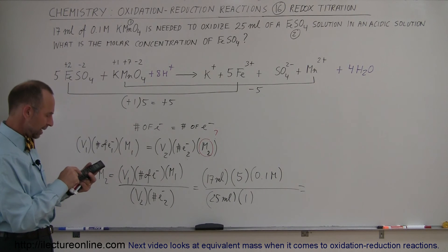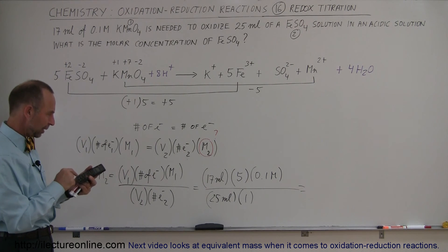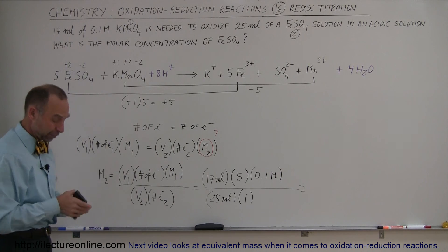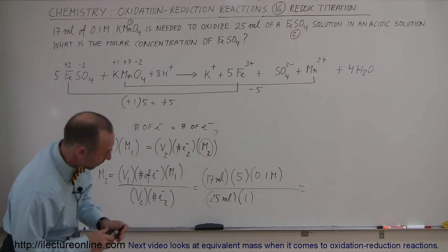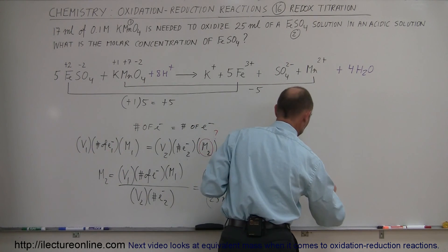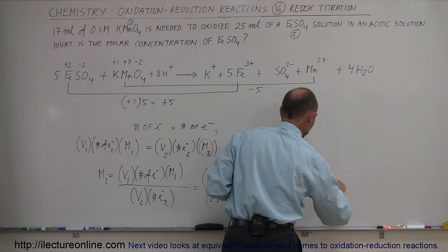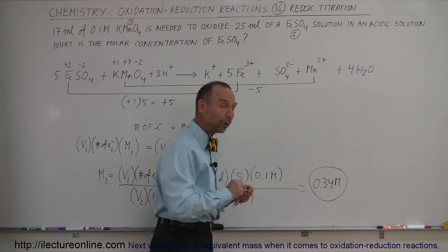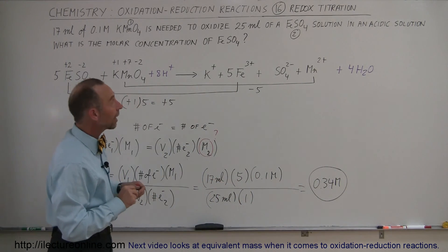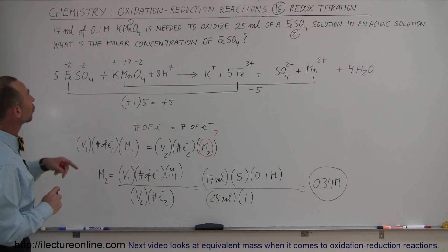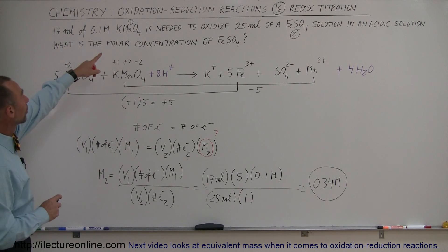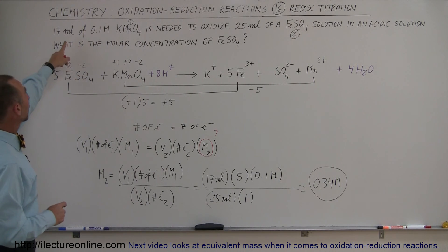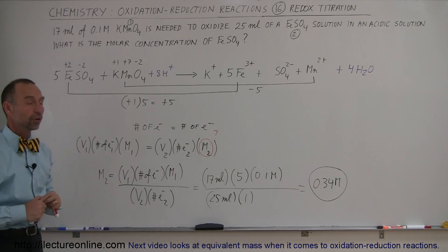So we have 17 milliliters, times the number of electrons exchanged by the potassium permanganate — one mole exchanges five electrons, so that's times 5 — times the molarity of 0.1 for the potassium permanganate, divided by 25 milliliters for the volume of the iron sulfate, times one electron exchanged per mole of iron sulfate. That gives us 0.34 molar — that's the molarity required of the iron sulfate in order to balance out the 0.1 molar solution of potassium permanganate when you have 17 milliliters of it.